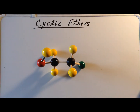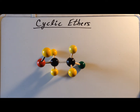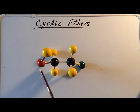Here is a ball-and-stick model of our 2-chloroethanol, showing the hydrogen atoms as yellow balls. The two carbon atoms are black. The leaving group, our chloride, is green. And we see the oxygen and the hydrogen of the hydroxy group.